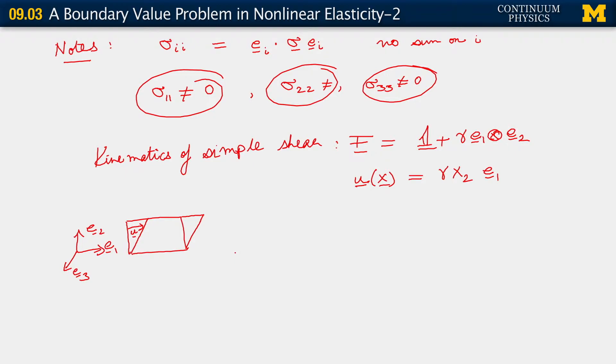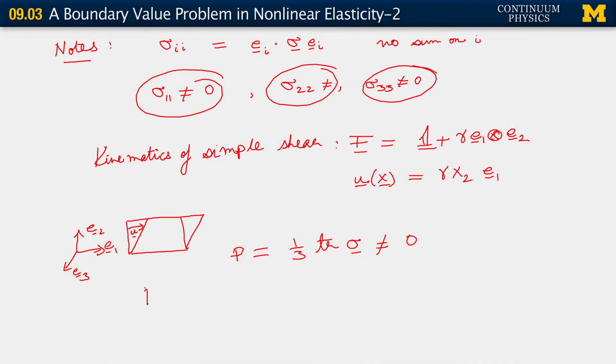Also, if we consider the hydrostatic stress, which is one third trace of sigma, it also is definitely non-zero, as you can see by going back to that slide. So these kinds of effects that we're seeing arise from the fact that we have non-linear deformations here. And we've properly, in fact, exactly accounted for non-linear deformations through the theory we've constructed over the past many segments. This effect, where even the kinematics of simple shear gives rise to non-zero normal stresses and therefore a non-zero hydrostatic stress, is an effect called the Poynting effect.